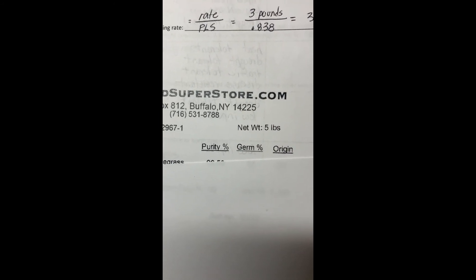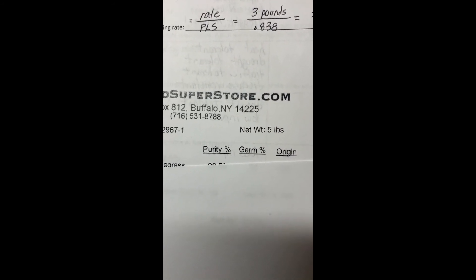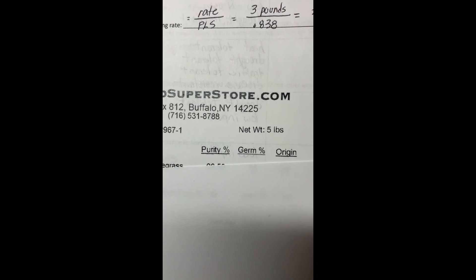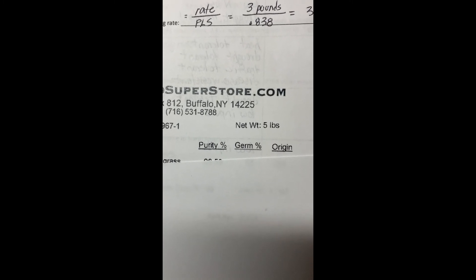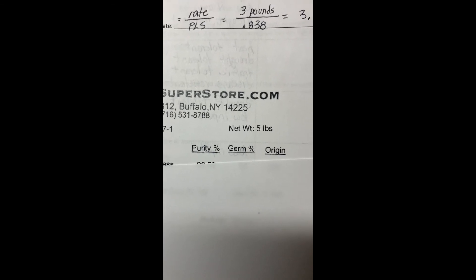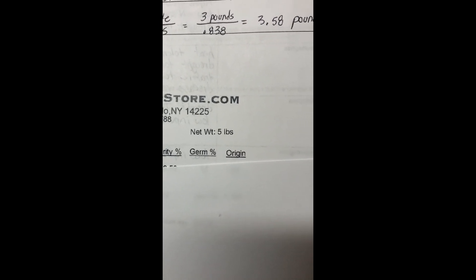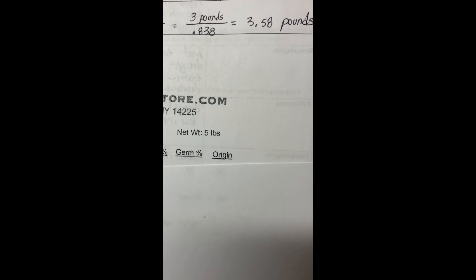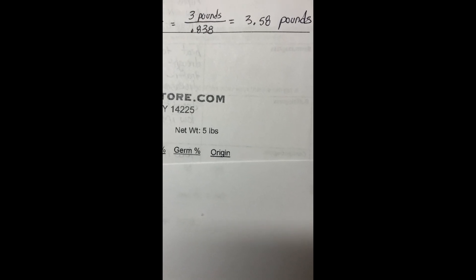So the original rate provided was three pounds. The pure live seed I'm going to convert back into the decimal form, so that would be 0.838. So when I divide three by 0.838, I end up with a new rate of 3.58 pounds per 1,000 square feet.